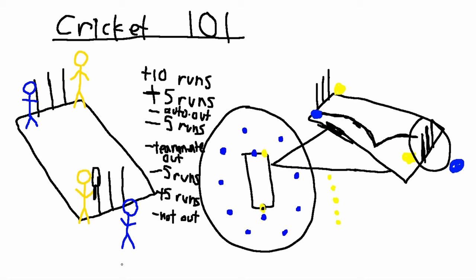Also, if you're the batsman and you hit the ball but it hits yourself in the nuts, that also counts as an automatic out and minus five runs for your team.